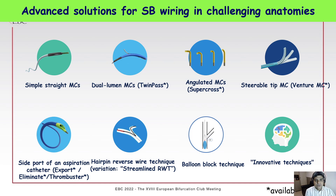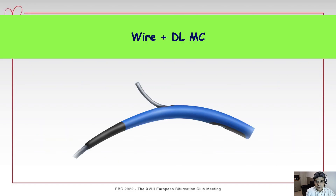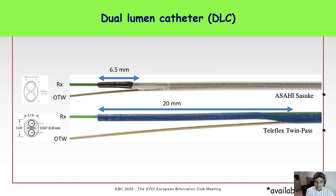These are some advanced solutions for side branch wiring in challenging anatomies that I would like to share. For the sake of time, I'll show a couple of these solutions. First, the use of double-lumen catheters. In Brazil, there are two double-lumen catheters available: the Sasuke from Nisseki, which is a very low-profile double-lumen catheter with the side port very close to the tip; and the Twin Pass from Teleflex, which is a bulkier microcatheter with the side port a little further from the tip.